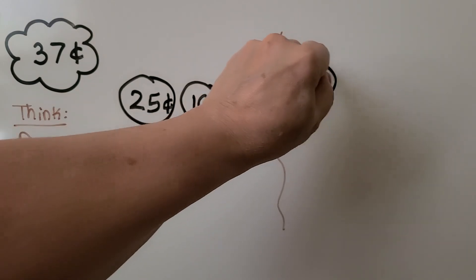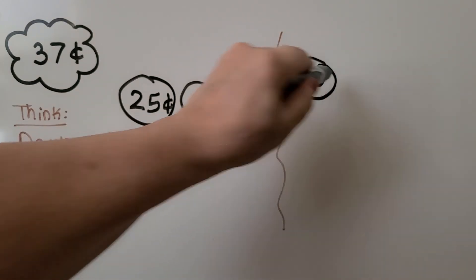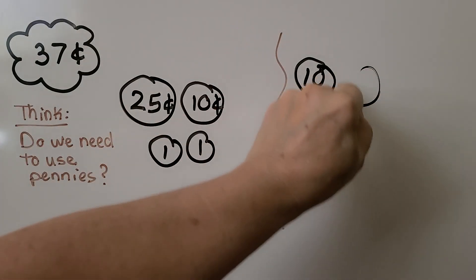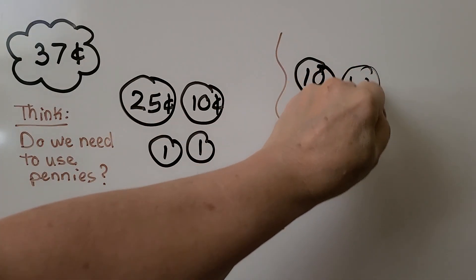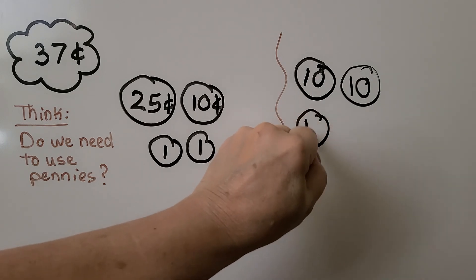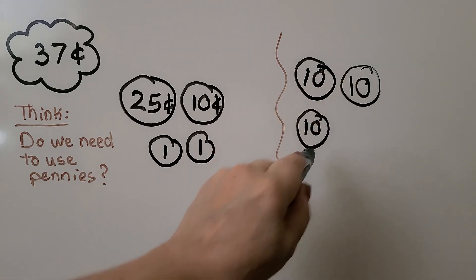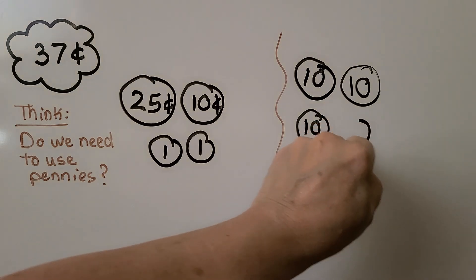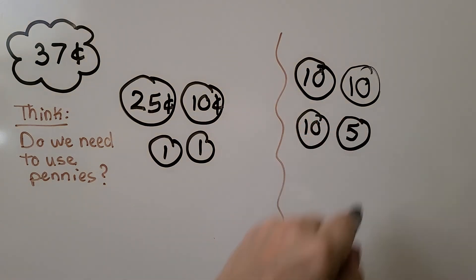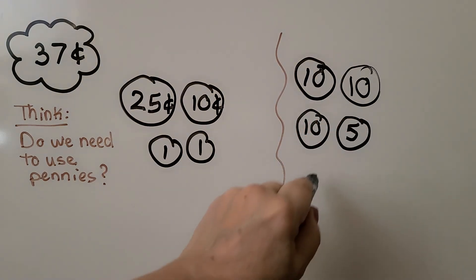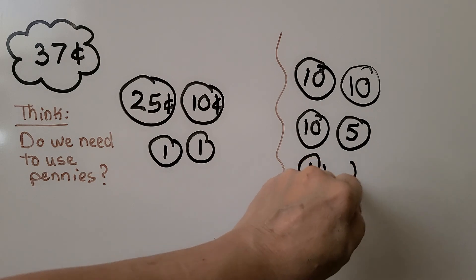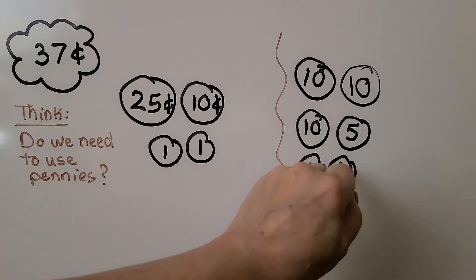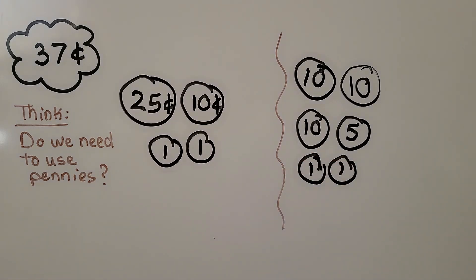I'm going to try a dime, another dime, and another dime — that's 30 cents. Then a nickel — now we're at 35 — and two pennies: 10, 20, 30, 35, 36, 37 cents.